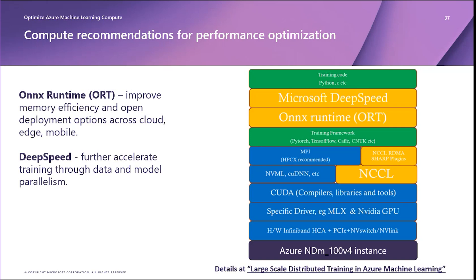The ONNX Training Runtime accelerates your model training by optimizing computation graphs, reducing memory copies, and using mixed precision. It allows for better memory utilization, enabling the training of larger models that might not fit into GPU memory otherwise.